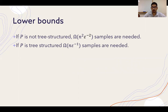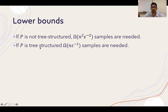Now I will mention our lower bounds. First, if p is not a tree-structured distribution, then something like n² · epsilon^{-2} samples are needed to learn an epsilon-approximate tree with 2/3 probability in the worst case. Second, if p is itself tree-structured, we need at least n · epsilon^{-1} samples. This shows that our upper bound for tree-structured distributions is almost tight.